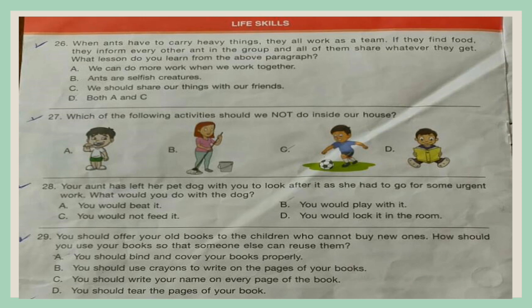Life Skills. Question 26. When ants have to carry heavy things, they all work as a team. If they find food, they inform every other ant in the group and all of them share whatever they get. What lesson do you learn from this? A. We can do more work when we work together, B. Ants are selfish creatures, C. We should share our things with our friends, D. Both A and C.